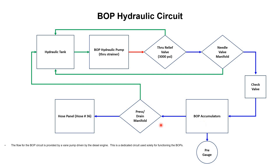From the BOP accumulators, with the help of the pressure drain manifold, we can control the flow again. When the position of the knob is on drain, pressure is moved back to the hydraulic tank. When it is on the pressure side, pressure goes to the hose panel. For this hydraulic unit, hose number 36 is for the BOP.